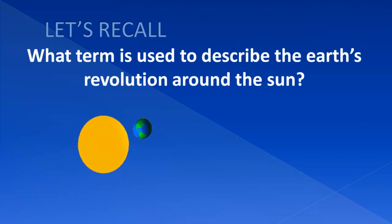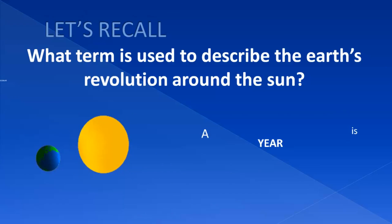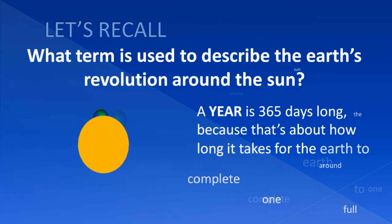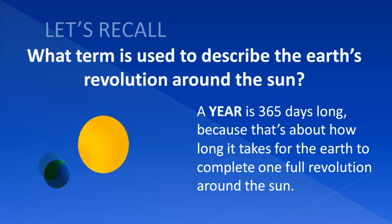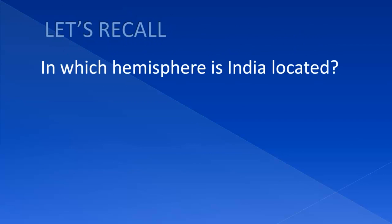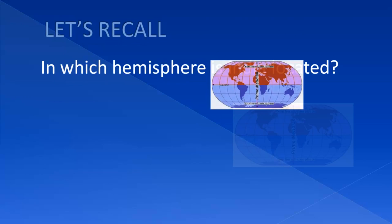What term is used to describe the Earth's revolution around the Sun? A year. A year is 365 days long because that's about how long it takes for the Earth to complete one full revolution around the Sun.